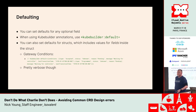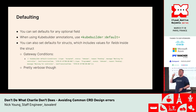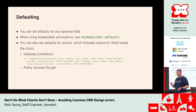You can set defaults for any optional field. Setting a default on a required field will never do anything since you have to supply a value on input. When using kubebuilder annotations, use the plus kubebuilder default marker. Setting defaults for scalar values like strings and integers is reasonably straightforward. Consider avoiding integer values when possible — you're better off using a string that you parse into an integer later.